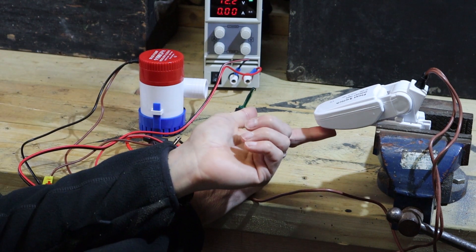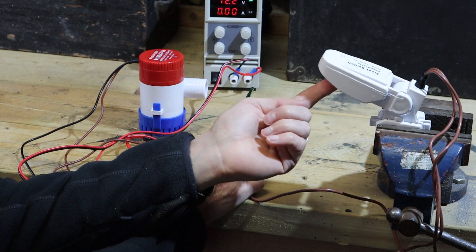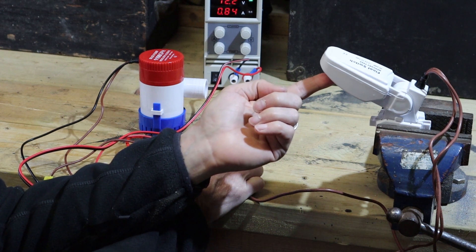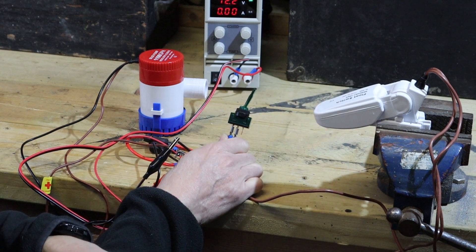So we get some water in the bilge. The float switch rises, pumps the water out. Then as the water level drops it turns itself off.